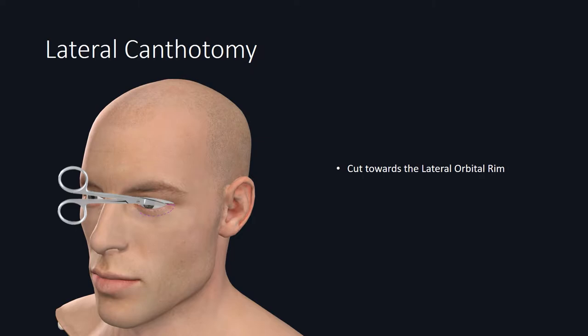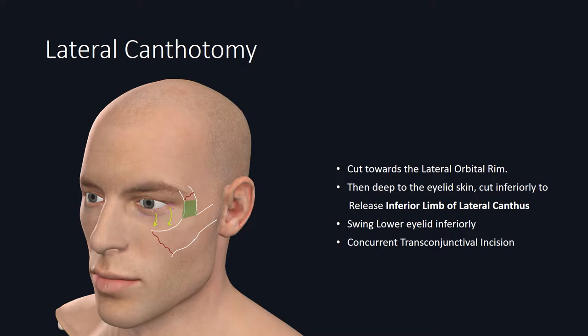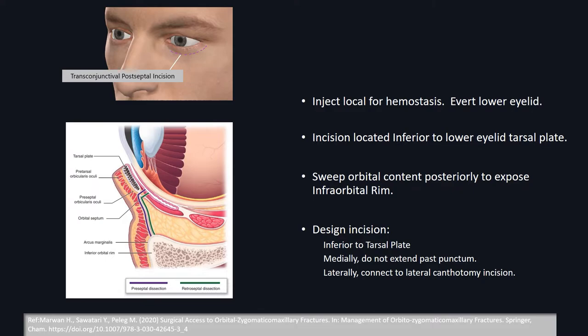Lateral canthotomy is usually done first, cutting with iris scissors towards the lateral orbital rim — one blade inside the lower eyelid and the other on the outside. Once you cut through the lateral canthotomy, be within the wound itself and cut deep to the eyelid while cutting inferiorly to release the inferior limb of the lateral canthus, also referred to as the lower eyelid portion of the lateral canthus. Once released sufficiently, this allows the entire lower eyelid to swing inferiorly, giving you good access to the inferior aspect of the lateral orbital rim. For additional access, combine this with transconjunctival incision, which is useful for malar eminence or orbital floor defects requiring repair.